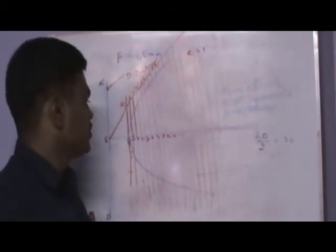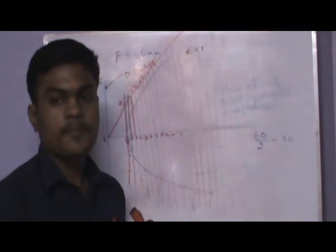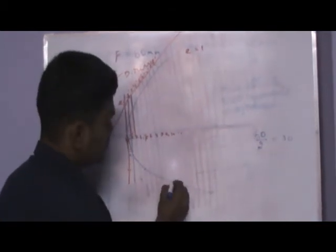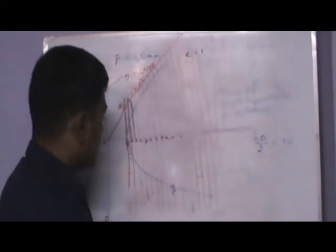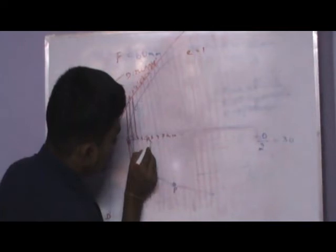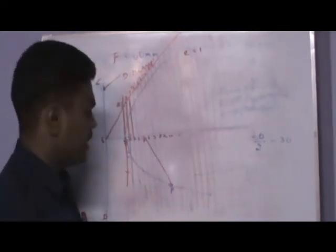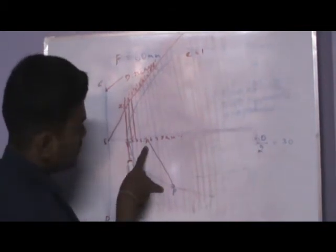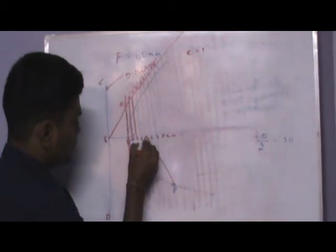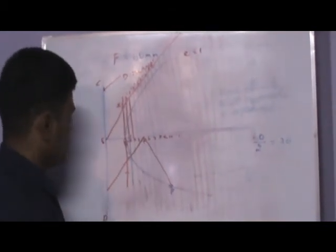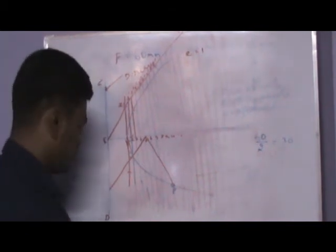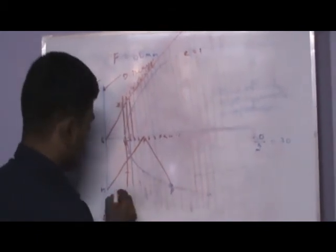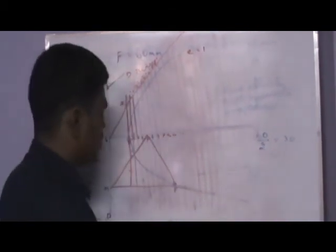Now, to draw a tangent and normal to this parabola. Take any point on the parabola — let's call it P — and join the point P and the focus F. With PF as the base, draw a perpendicular line. If you extend it, it will meet the directrix at a point which I am naming M. From M, draw a straight line, and you will see that line touches the parabola — that is your tangent.